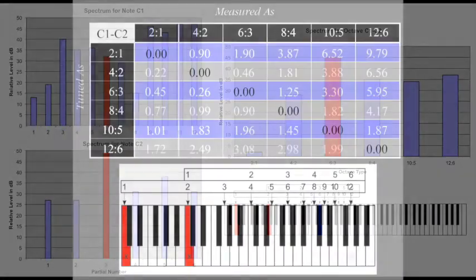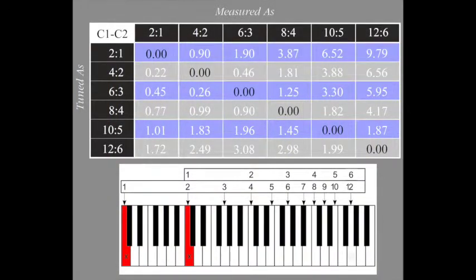This chart shows the beat rates at each partial level for each octave type. The partial level that is underlined indicates the one that has the greatest amplitude.